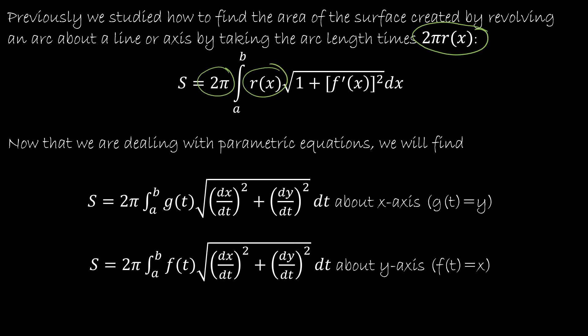So we're taking it by 2πr. And r would sort of change based on if we were going about the x-axis or the y-axis. So that's exactly what we're going to do here. We've got 2π. And we're going to use g(t), which was that y function about the x-axis, or f(t), which is that x function, if we're rotating about the y-axis.